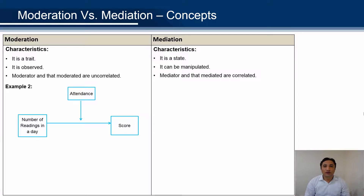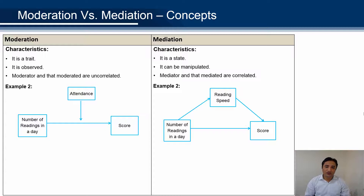Let's discuss more examples of moderation and mediation. First example is moderation: the number of readings in a day can predict score and attendance is a moderator. So number of readings can predict score, but number of readings cannot predict attendance. For the mediation example: number of readings can predict the score, number of readings can also predict reading speed, and reading speed can predict the reading score. Here, the IV is predicting the DV and also predicting the mediating variable.